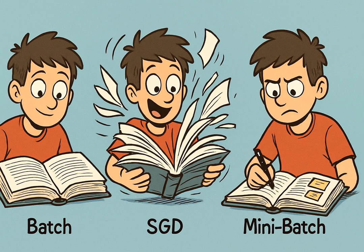Think of it like learning a new skill. Batch gradient descent is like reading the entire textbook before practicing — very thorough, but slow. Stochastic is like practicing after every sentence — chaotic, but fast. Mini-batch is like studying one chapter at a time — efficient and practical.